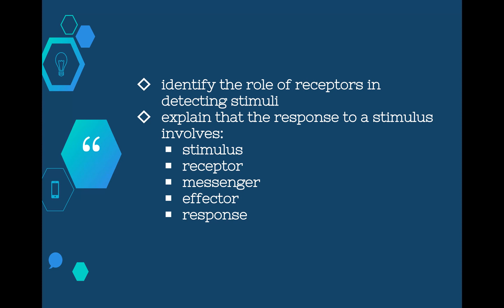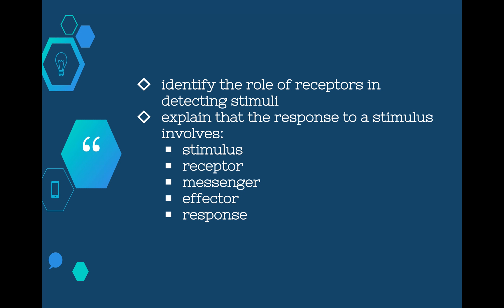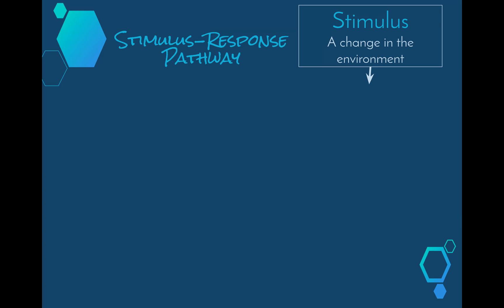Hopefully before we even go any further you already know all of this terminology from the maintaining a balance topic when we looked at feedback loops, however we need to go over it again in terms of communication this time. So a stimulus is a change in the internal or external environment of an organism.